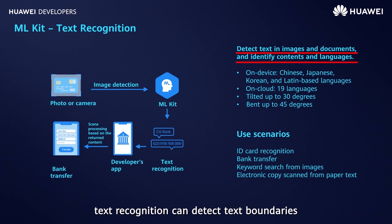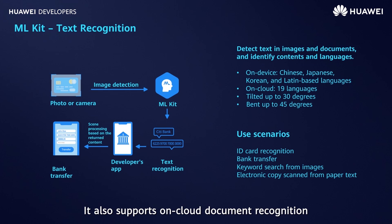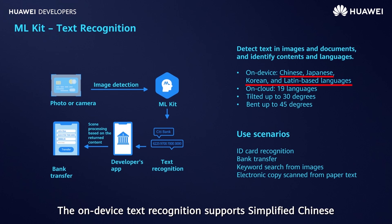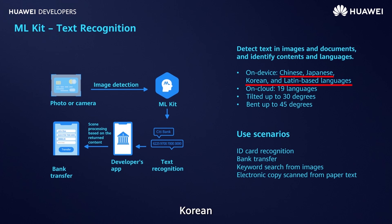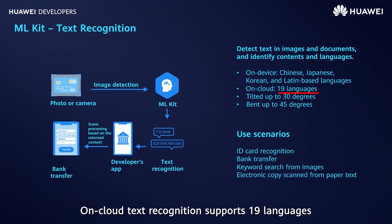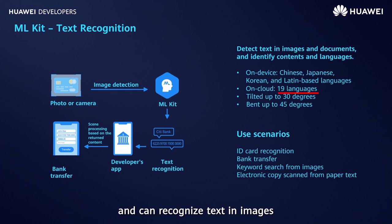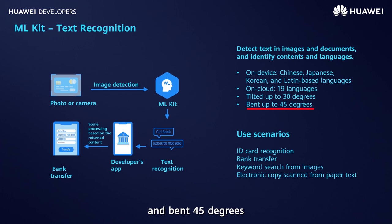Text recognition can detect the text boundaries and recognize content and languages. It also supports on-cloud document recognition. The on-device text recognition supports simplified Chinese, Japanese, Korean, and Latin-based languages. On-cloud text recognition supports 19 languages, including the preceding ones, and can recognize text in images that are tilted up to 30 degrees and bent 45 degrees.